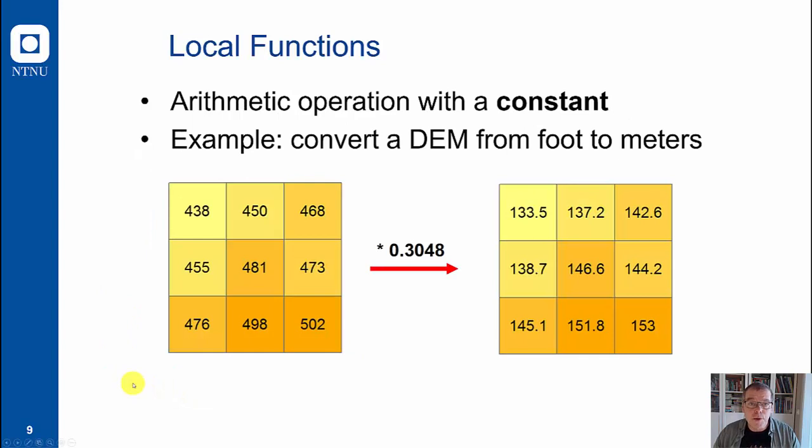Let's go to some examples of local map algebra function. Often you combine two rasters but you can also combine one raster with a constant. This is what you typically want to do if you have a digital elevation model where the values are in feet and you need to convert them to meters. You can multiply each of the input pixel values in the input raster. This works as a cell by cell function. So you multiply this value with a constant and you get this value which is in meters. You continue to the next cell, take this value, multiply it with a factor and get this value. So each cell at a time.